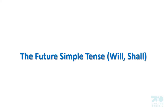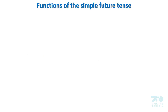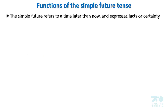The future simple tense: will and shall. Function of the simple future tense. The simple future refers to a time later than now and expresses fact or certainty. In this case, there is no attitude.